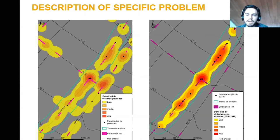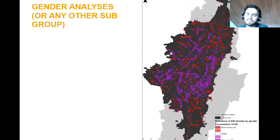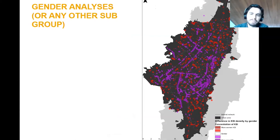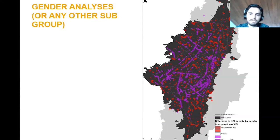You could also use kernel density for analysis of groups. This shows the difference between the concentration of female victims and male victims. In this case, male victims are mostly concentrated in arterial roads, while female victims are concentrated in local roads. This can help you identify a specific focus — for example, low speed zones should have a gender focus because it's where mostly women are being victims of traffic crashes.